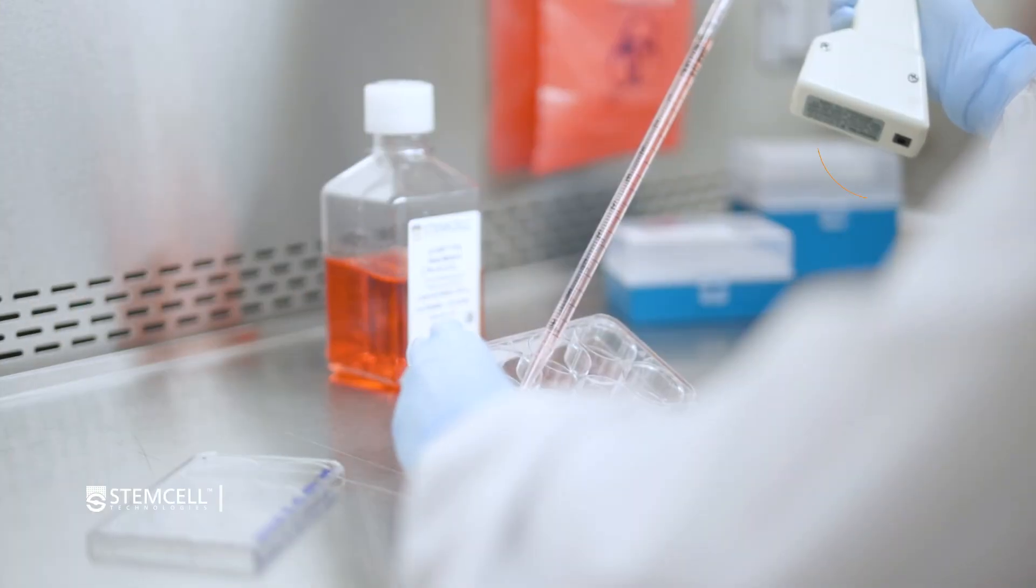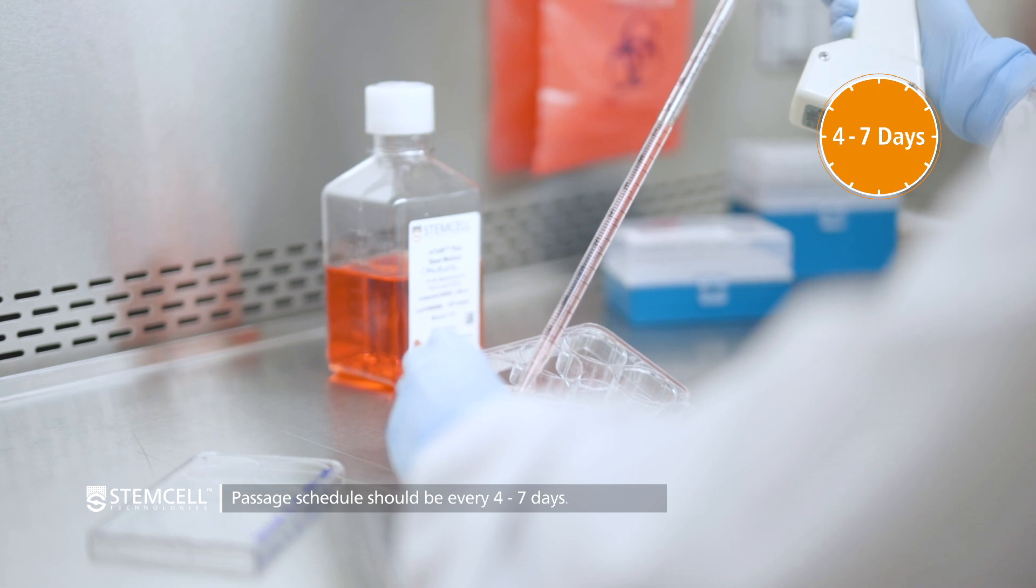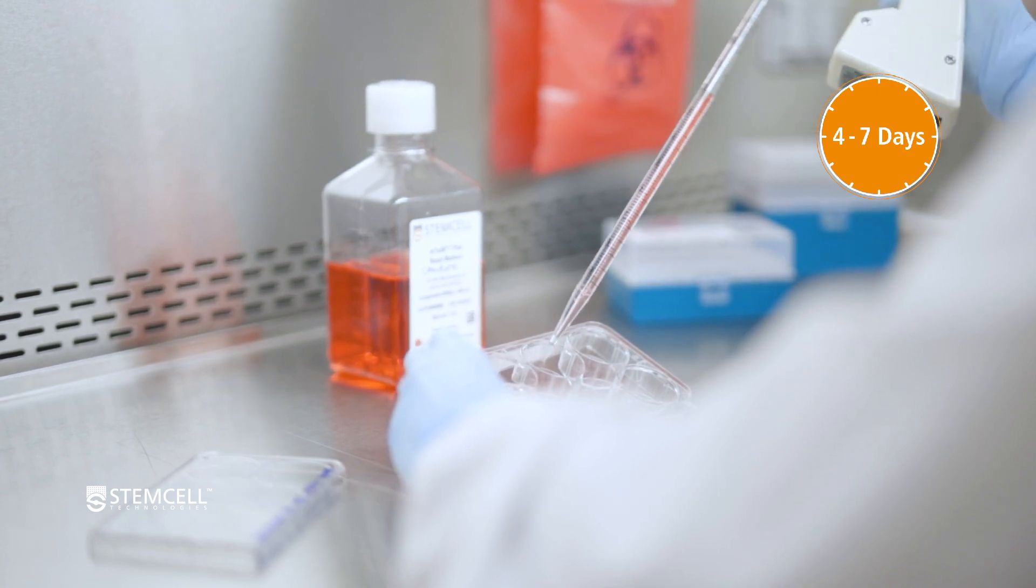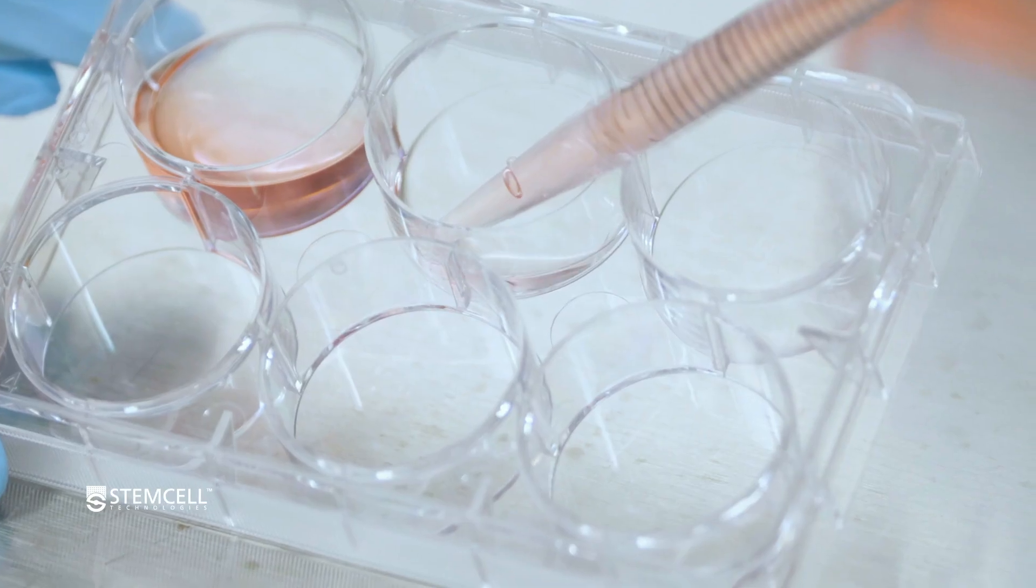The time between passages, or the culture schedule, should be anywhere from every four to seven days. If passaging occurs more frequently, the HPSC colonies may be quite small, and this could cause issues with reattachment of aggregates in the next passage.